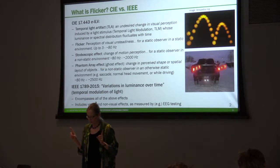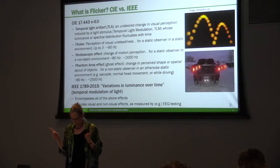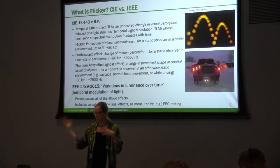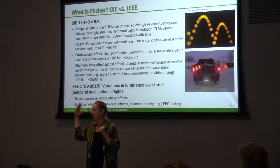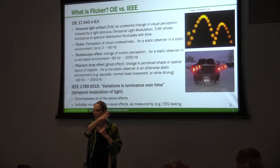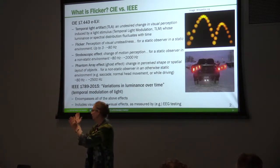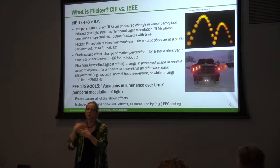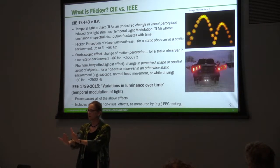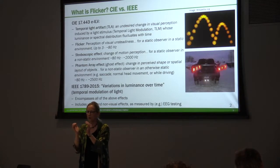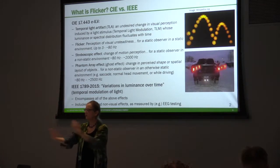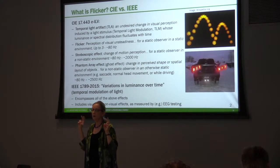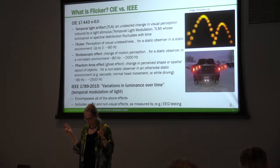Then there's a third form called the phantom array effect, also called the ghost effect. That's a change in perception due to a light source tracking across your field of view as a result of a change in eye movement relative to the light source. What they're doing is defining the relative movement between your view and the object. If there's relative movement, it's technically called the stroboscopic effect or the phantom array effect, not flicker.